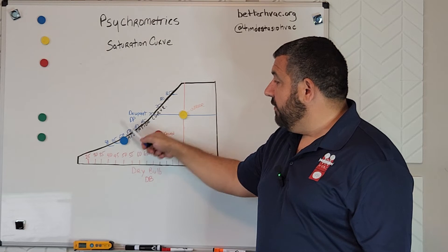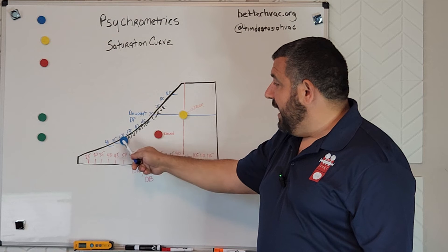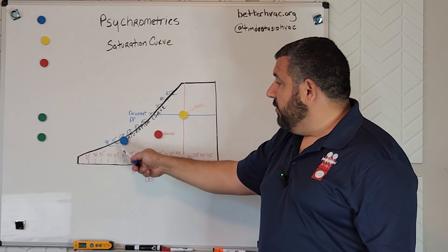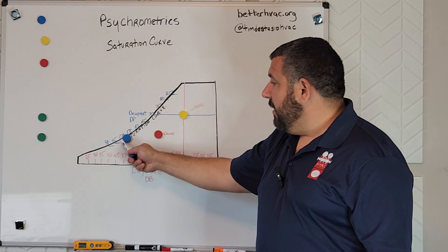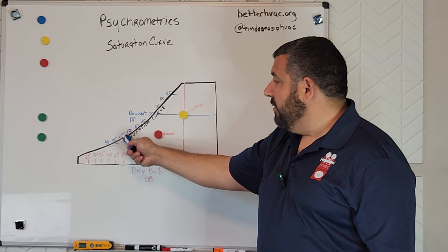We get to our saturation curve and we slide down the slide until we cool it down to a point of somewhere around 55 degrees and around 50 to 55 degree dew point.